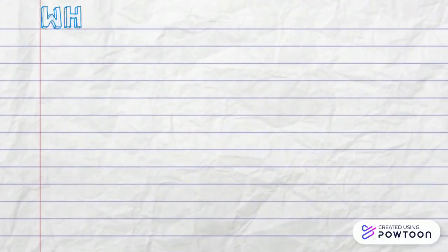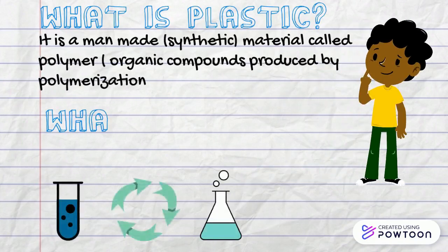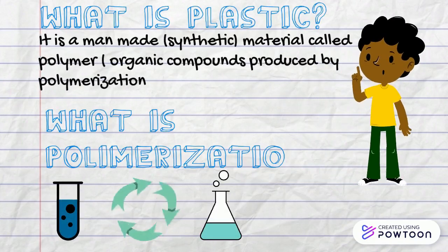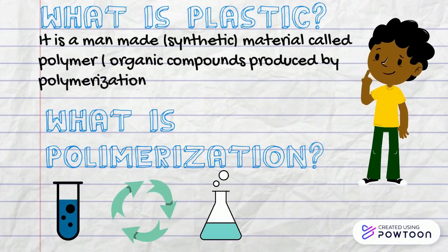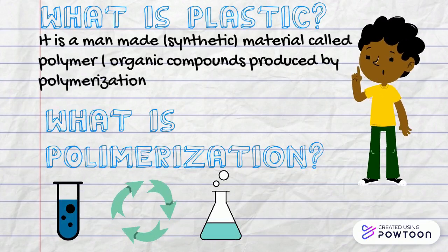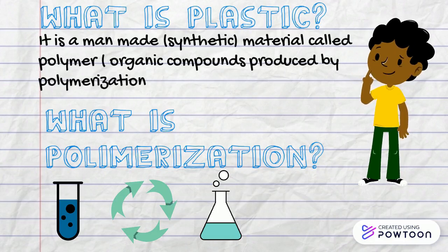What is plastic? Plastic is a man-made synthetic material called a polymer — organic compounds produced by polymerization. Polymerization means any process where small molecules called monomers are combined chemically to produce a chain-like or network of molecules called a polymer.